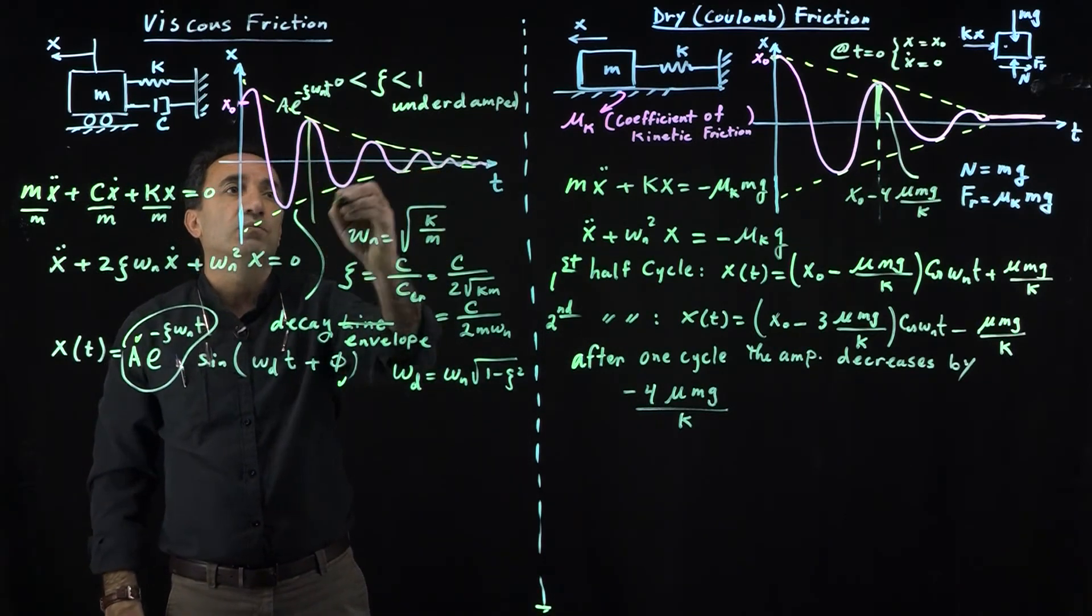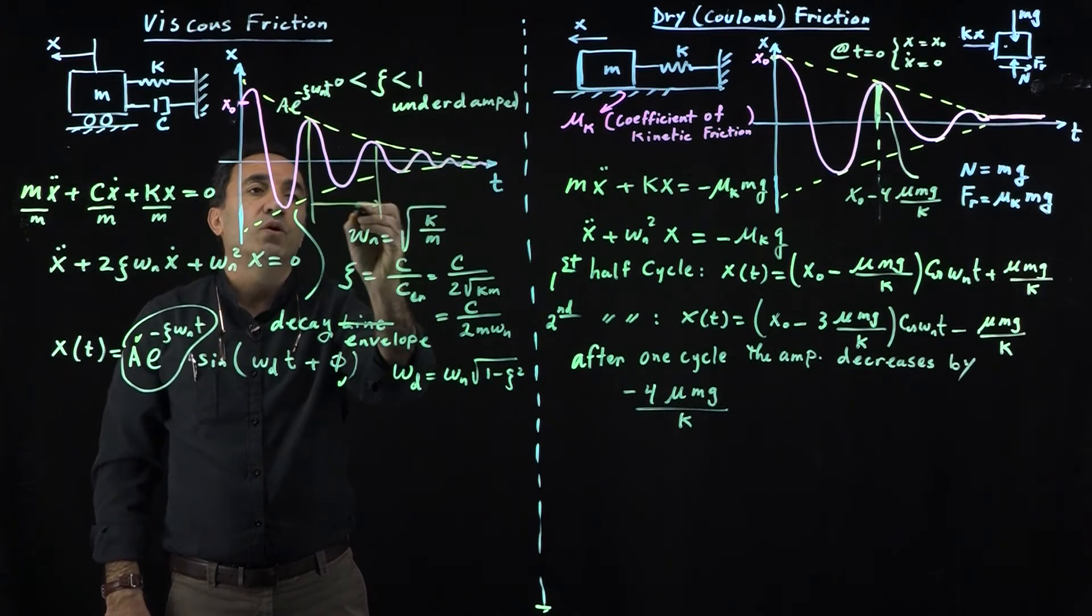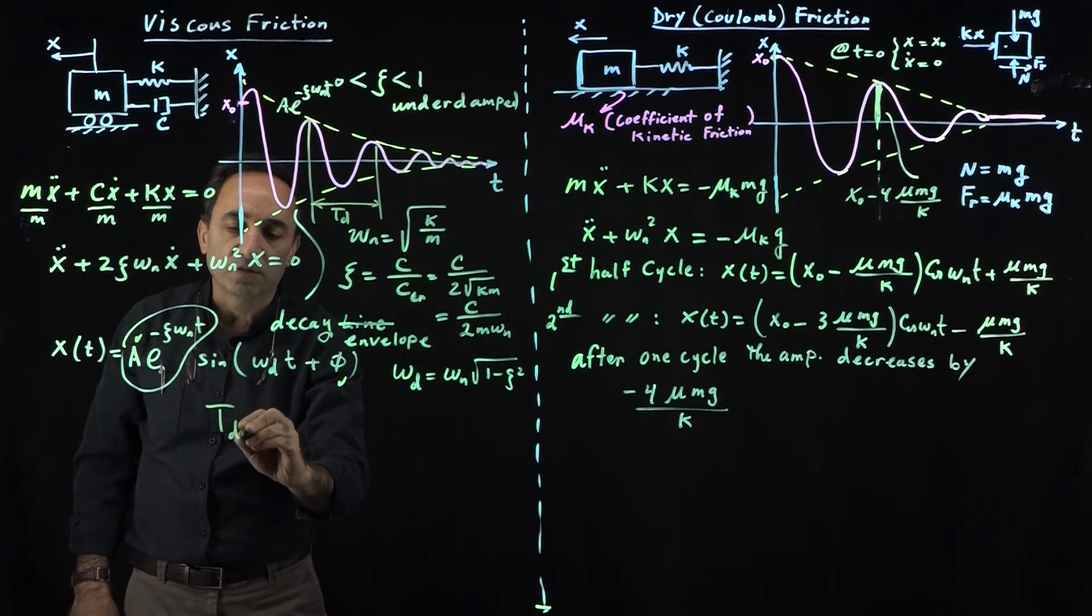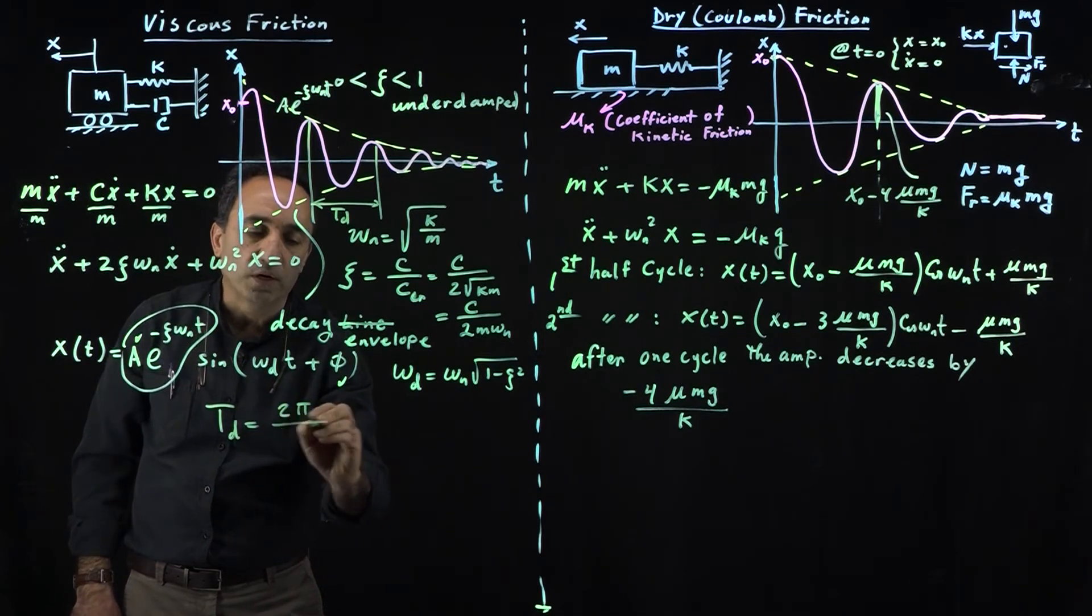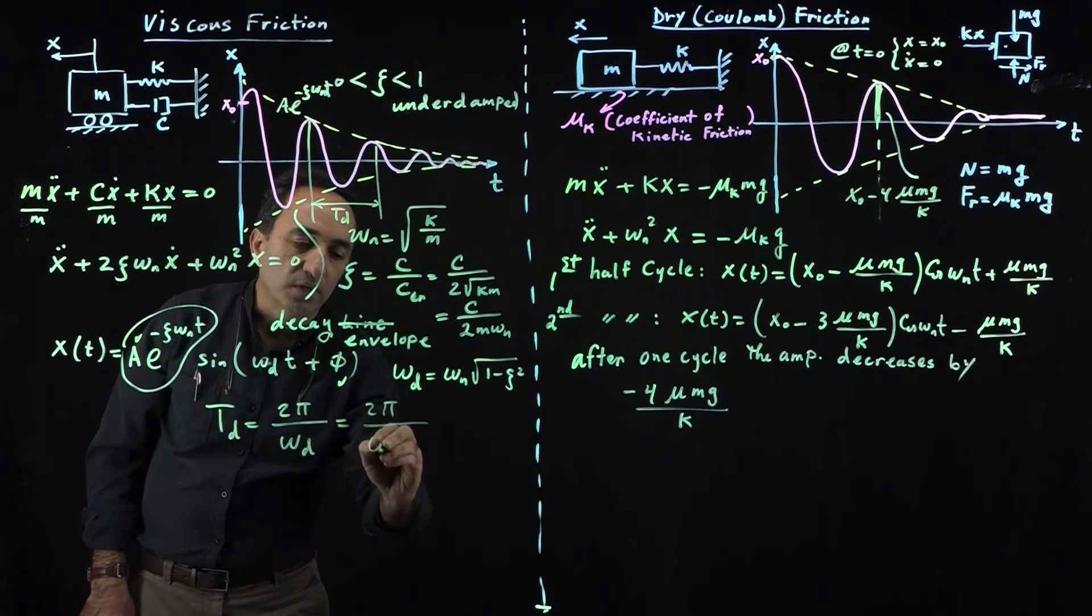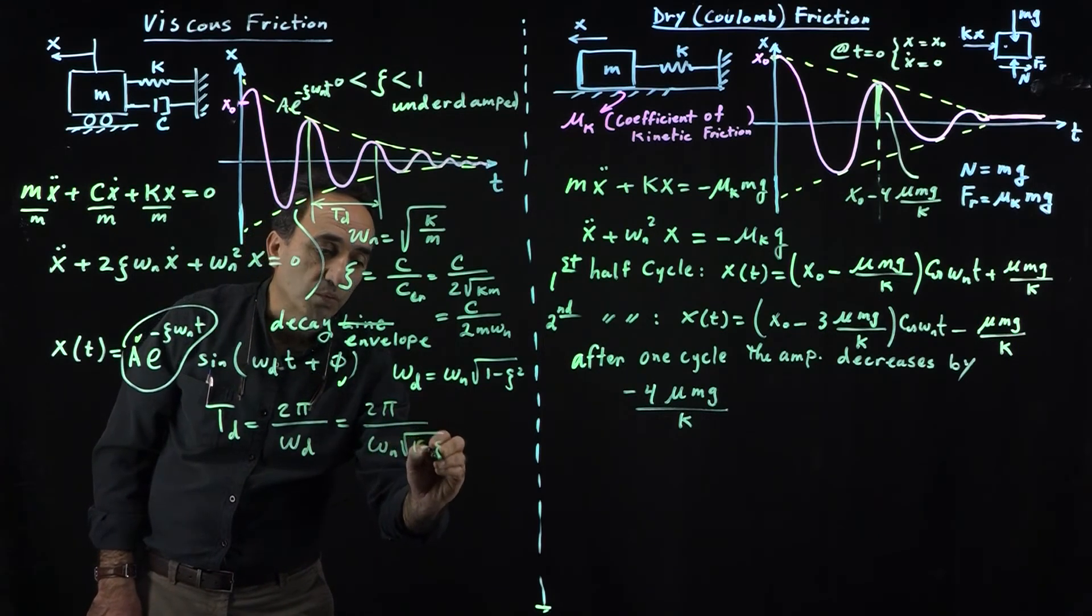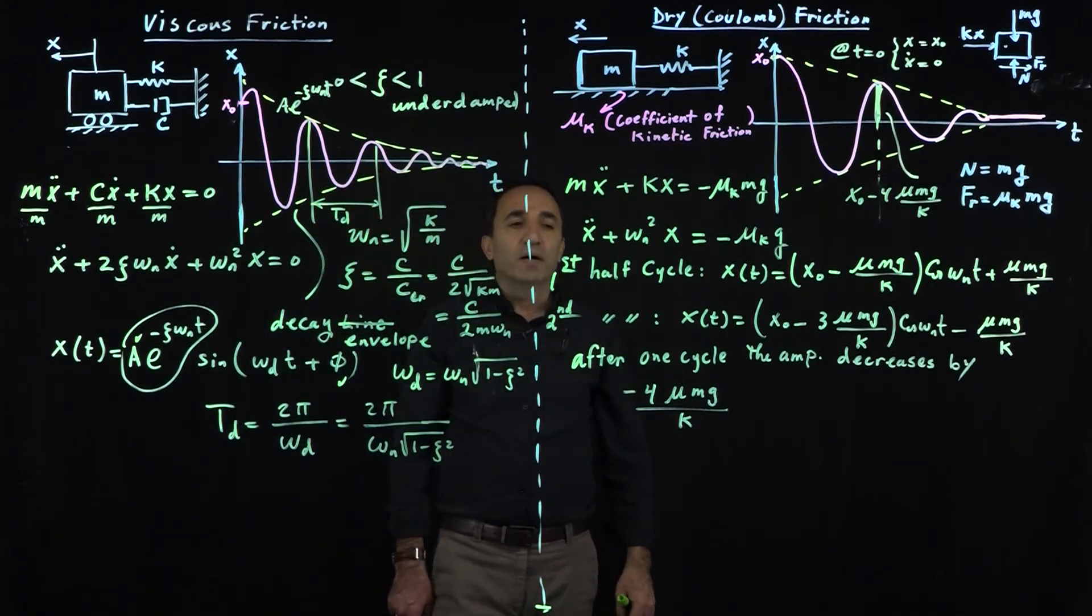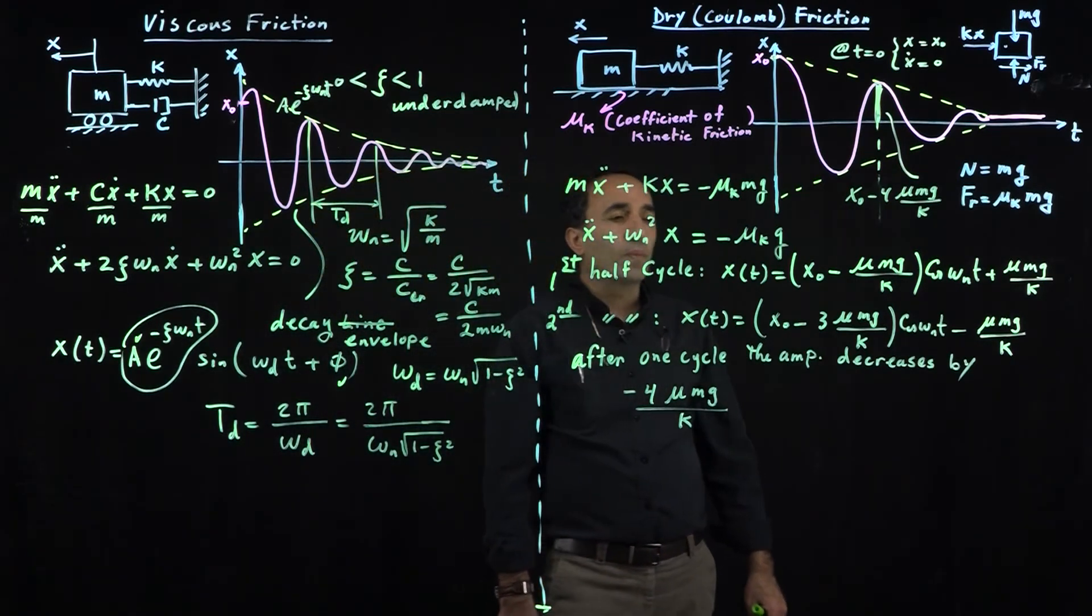Peak to peak, if you take this peak to peak, that's one period—the damped period. The damped period can be determined by taking 2 pi divided by omega_d, which is omega_n times square root of 1 minus zeta squared.